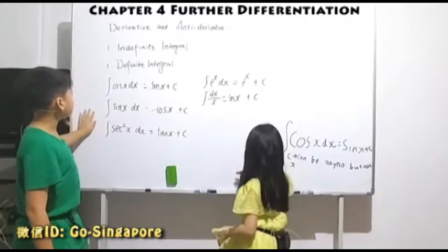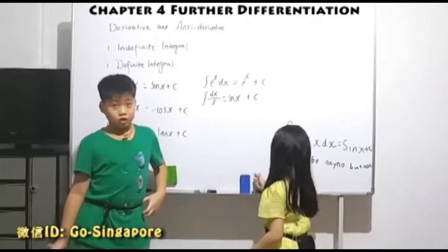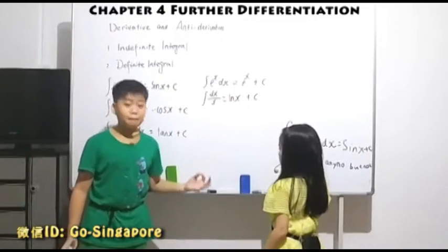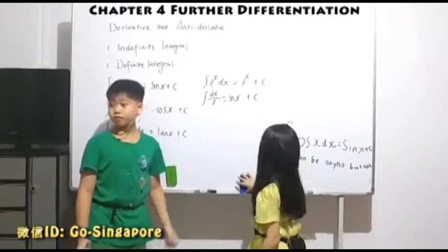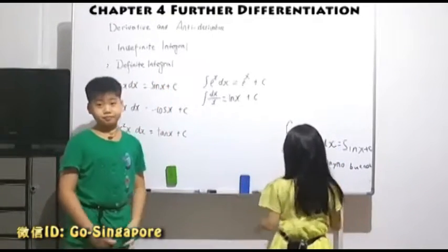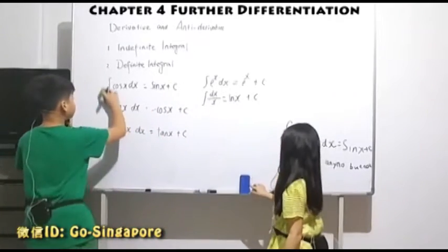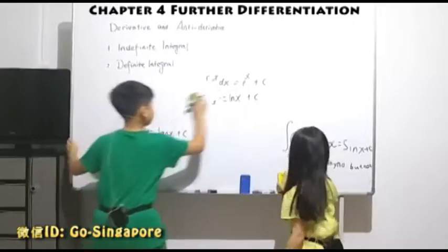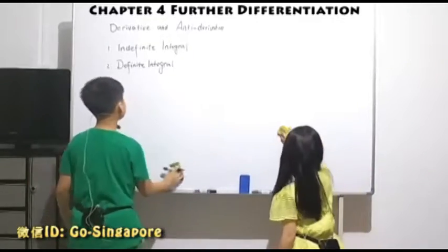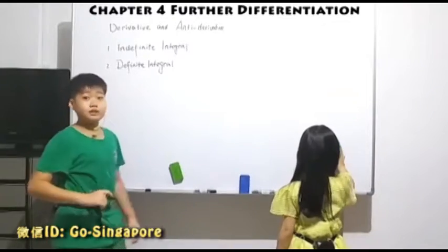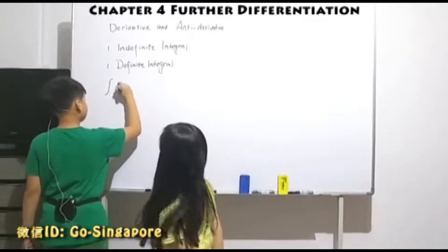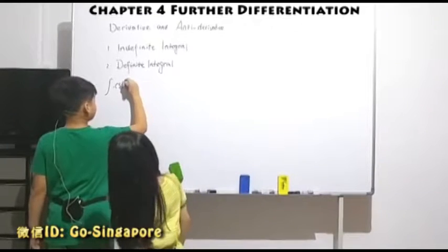All of these belong to the indefinite integral. Why? Because they have the arbitrary constant C — it can be any number except x. But what happens if it is a definite integral? Do you know what happens?